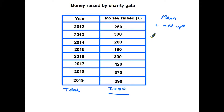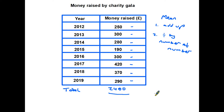For step two, we divide by the number of numbers. Looking at the numbers we've added up, there are eight of them — one, two, three, four, five, six, seven, eight. So we take our total of £2,400 and divide it by eight, which gives us 300.